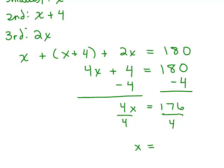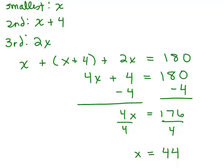Then we would have to divide both sides by 4. Four goes into 176 forty-four times. So we got that x is 44. Alright, now what did x stand for? Well, x stood for the smallest angle.